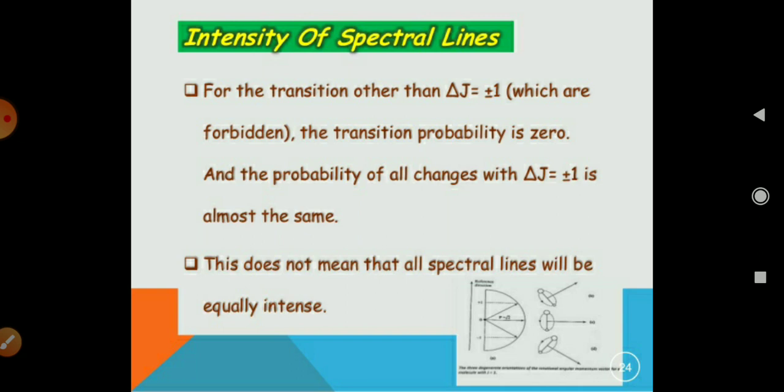For the transition other than del J equals plus minus 1, which are forbidden, the transition probability is zero. And the probability of all changes with del J equals plus minus 1 is almost the same. This does not mean that all the spectral lines will be equally intense.